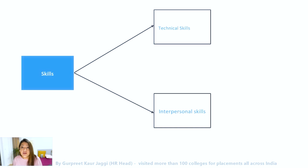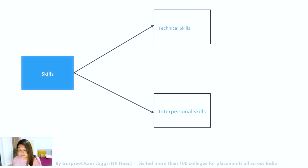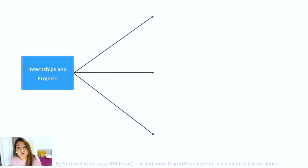When capturing interpersonal skills, also include the tools you know. For example, if you're listing good communication as an interpersonal skill, you can also mention MS PowerPoint. Capture all tools you've worked with, as this gives you an additional edge in your CV. Do not skip this section — it is very important to clearly call out your technical skills.